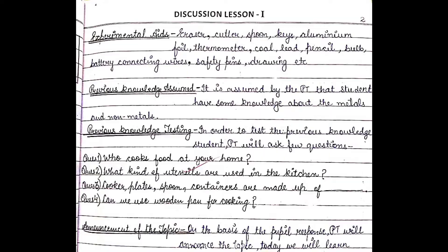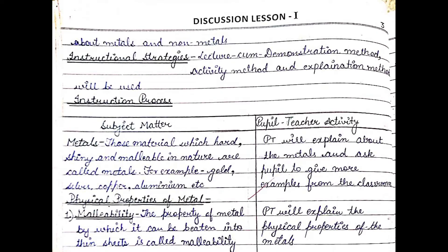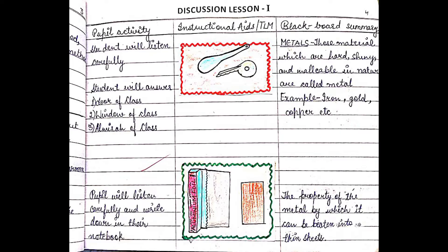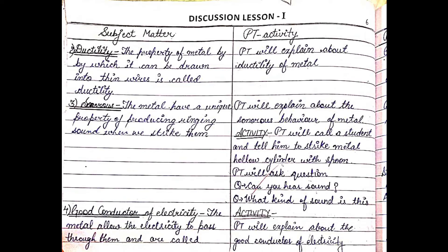Then comes the instructional strategies and instructional process subject matter, where I have written about the definitions and the physical properties of metal, and the pupil-teacher activity — what the PT is going to do in the classroom. The third column is pupil activity, the fourth is the aids or TLMs used, and the fifth column is the blackboard, where whatever the PT will write is recorded.